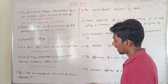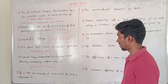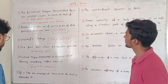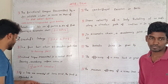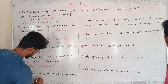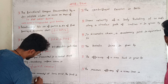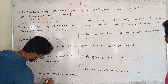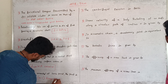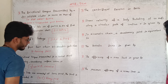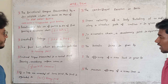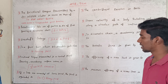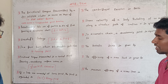If n-links are connected to the same joint, the joint is equivalent to n minus 1 binary joints. That is: n-links at the same joint equals n minus 1 binary joints.